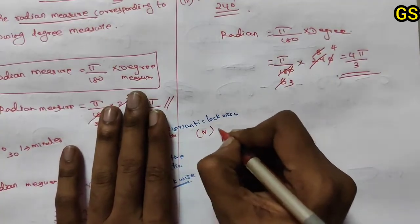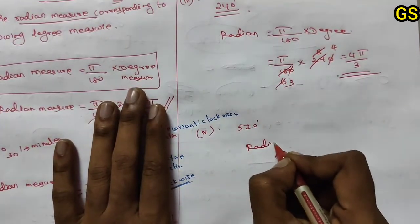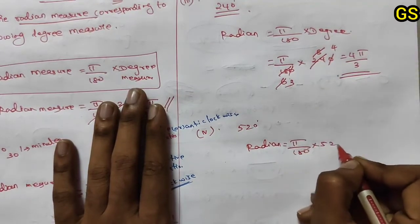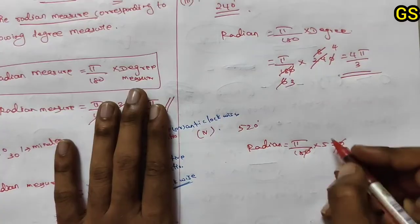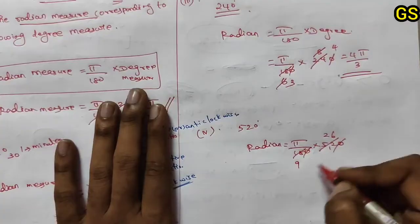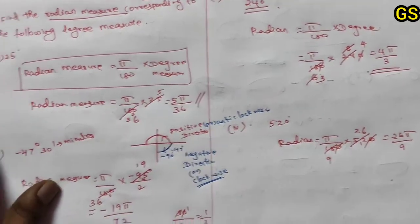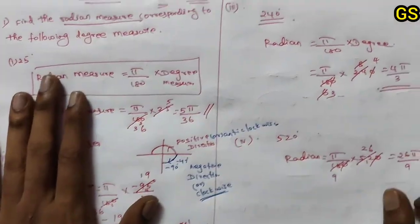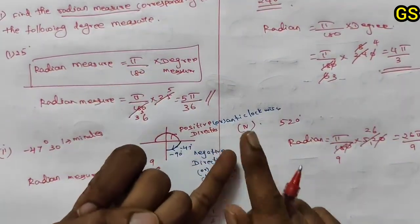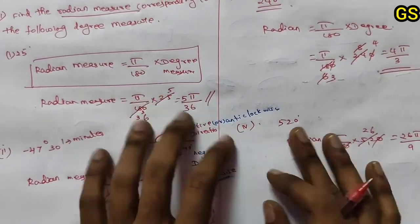Next, fourth subdivision: 520 degrees. Radian equals pi by 180 into 520. Using the 2 table: 26 times, cancel. The answer is 26 pi by 9. So the fourth subdivision answer is 26 pi by 9. That completes the trigger table shortcut for this exercise.